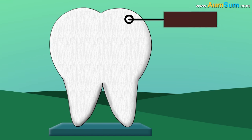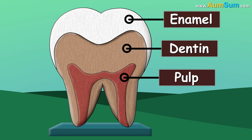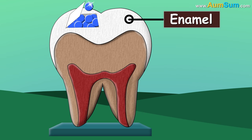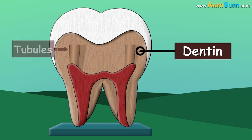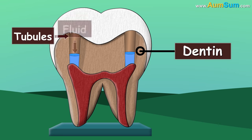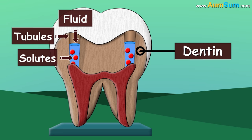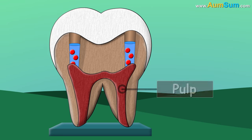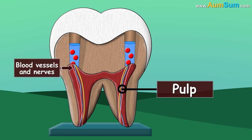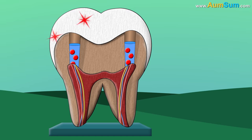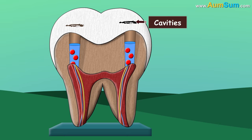Our teeth consist of enamel, dentin, and pulp. Enamel is mostly made of minerals. Dentin contains tubules filled with a fluid with some solutes dissolved in it. Whereas pulp has blood vessels and nerves.